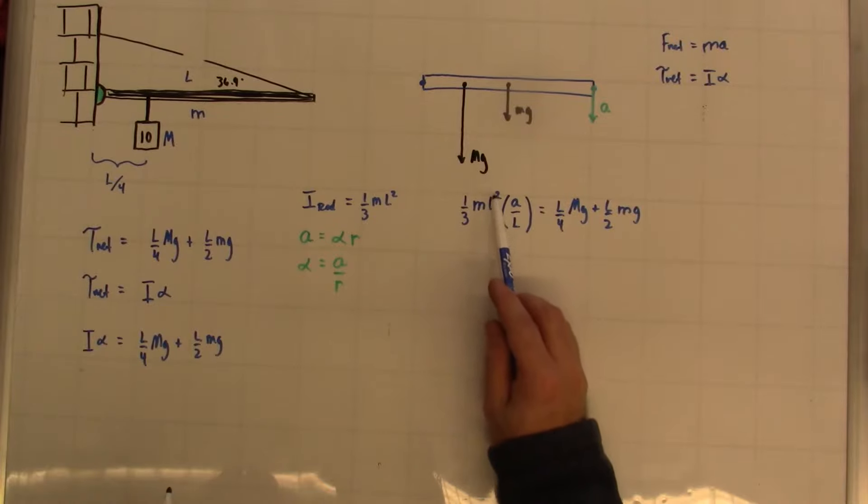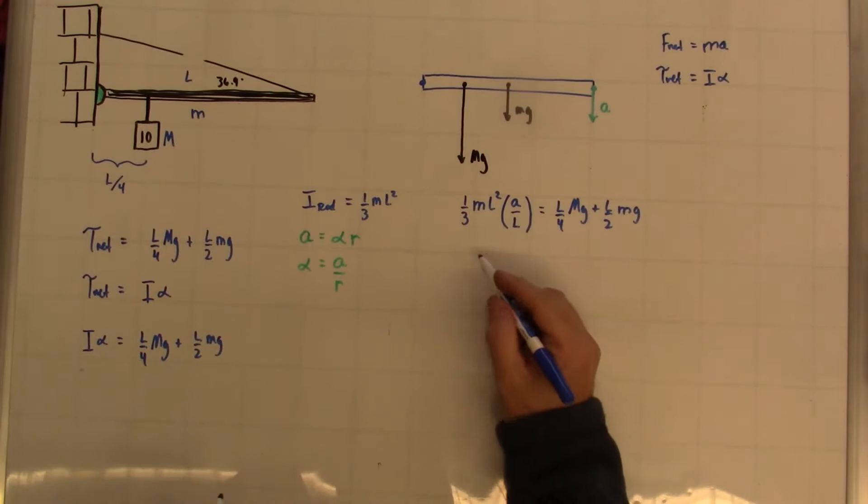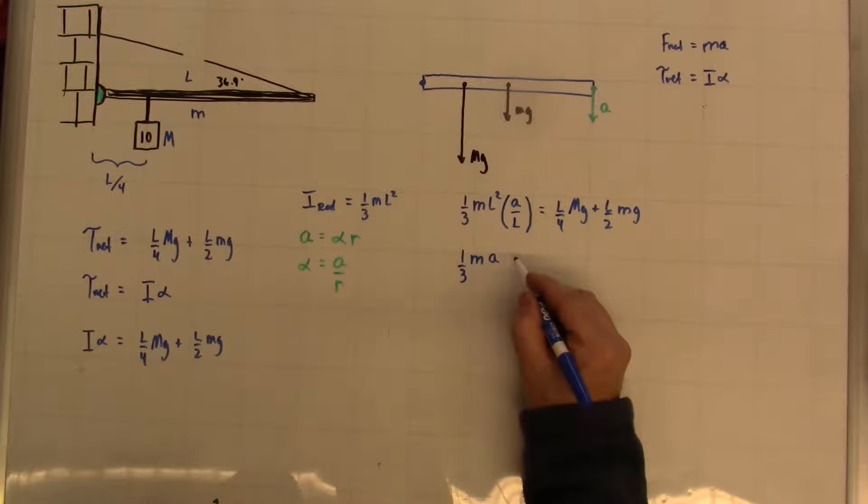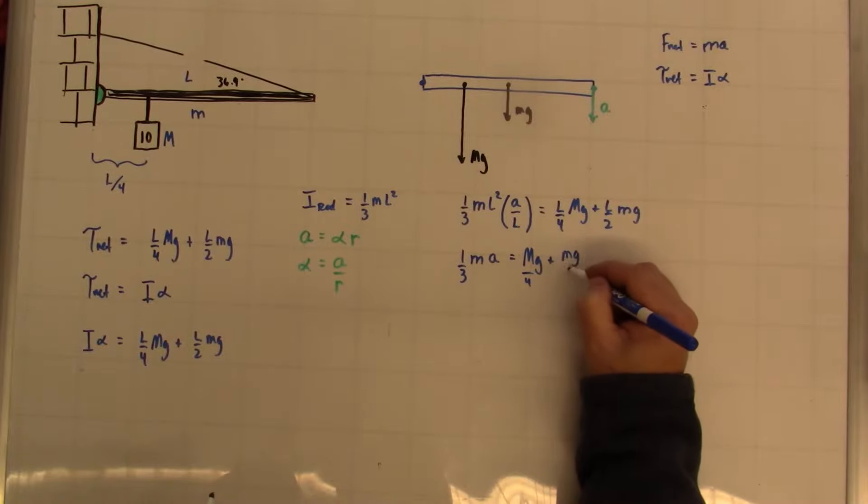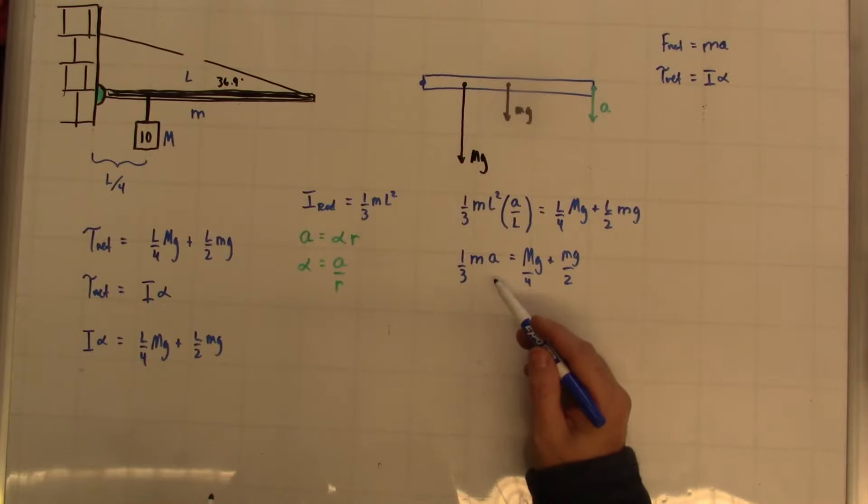One thing to notice right away is that L over 2 divided by L is an L on this side, and each of these terms also has an L. So the Ls magically disappear, which is nice. So if I simplify, I end up with 1 third little m A is equal to big Mg over 4 plus little mg over 2. This actually seems pretty good because I have little m and big M, and the G value is the gravitational field strength. That's 10 N per kilogram. So I should actually be able to solve pretty easily here.